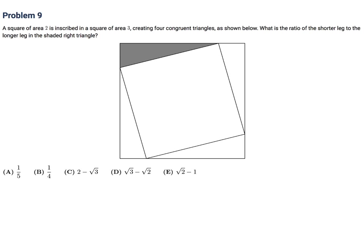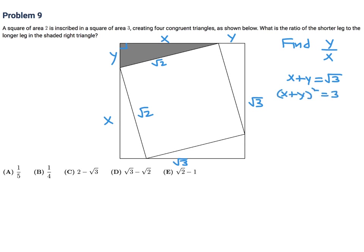The square of area 2 is inscribed in the square of area 3, creating 4 congruent triangles. What is the ratio of the shorter leg to the longer leg in the shaded right triangle? Let's label the shorter leg Y and the longer leg X. By symmetry, all four triangles have legs X and Y. We're asked to find the ratio Y over X. Using Pythagoras and the fact that the areas are 2 and 3: the side lengths are root 2 and root 3. So X plus Y equals root 3, and X² + Y² = 2.